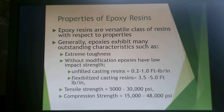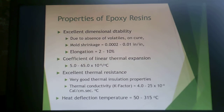Epoxies are versatile, and depending on the formulation or type of epoxy, properties can vary widely. Without modification, they have low impact strength, but flexibilized epoxies have much better impact strength. Tensile strengths range up to 30,000 psi and compressive strength up to 48,000 psi. They have excellent dimensional stability due to the absence of volatiles, very little mold shrinkage, very little elongation, and a very low coefficient of linear expansion. They also have excellent thermal resistance and thermal conductivity, with heat deflection temperature varying by epoxy type.